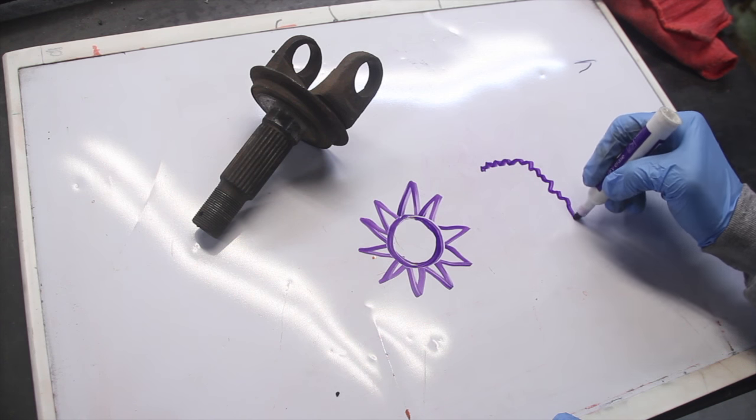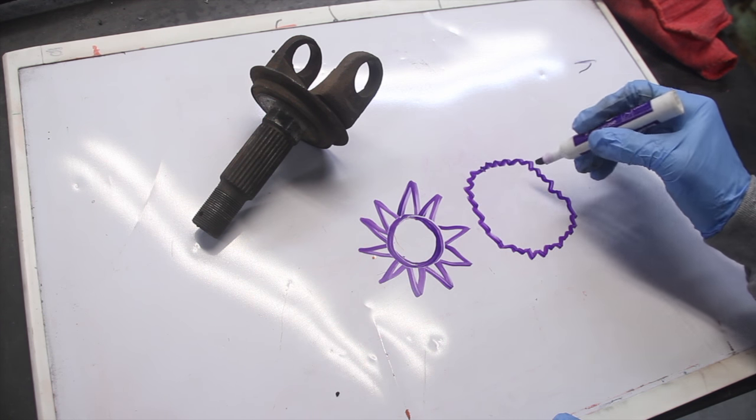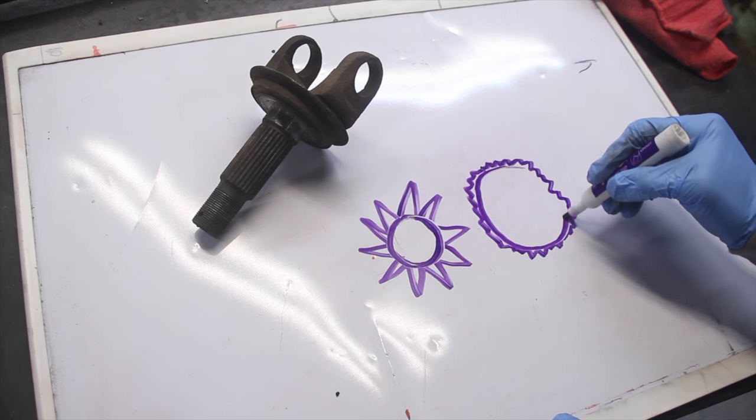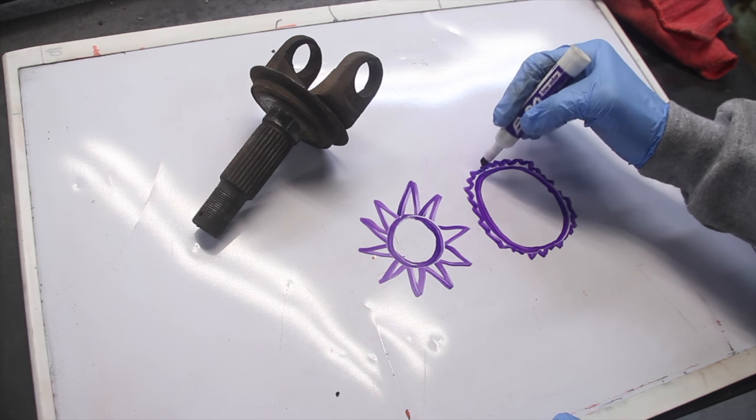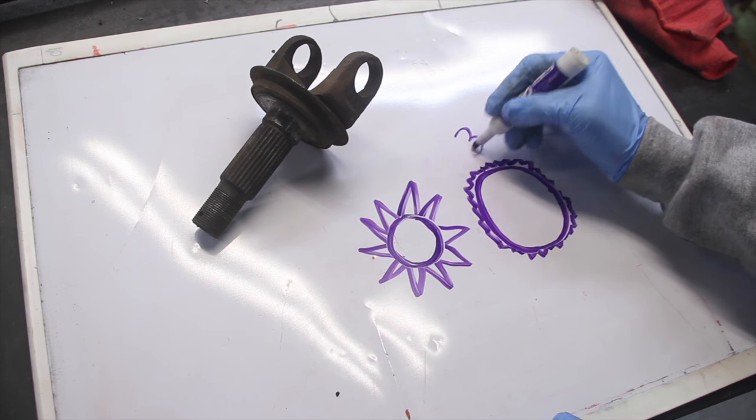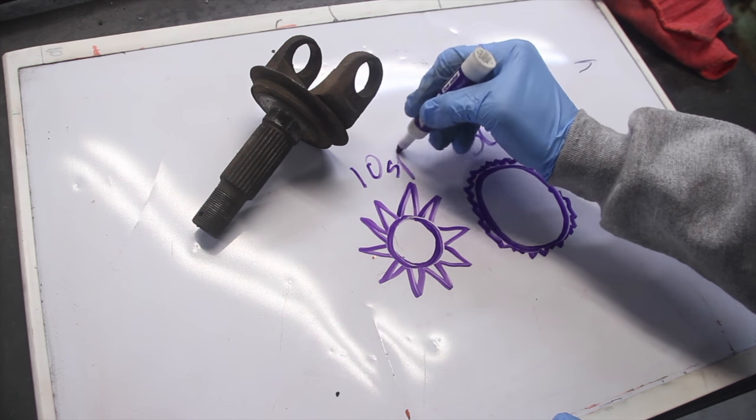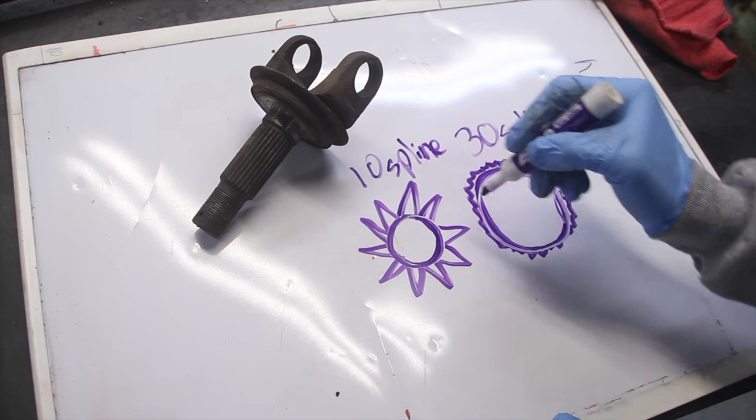I'm just going to pretend here that we've got 30 splines. Okay, now look at the difference in the actual meat of the shaft. Since the splines are smaller on the 30-spline than they are on the 10-spline, you get more meat of the shaft.